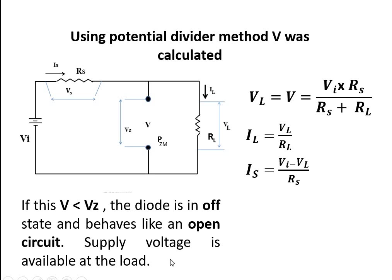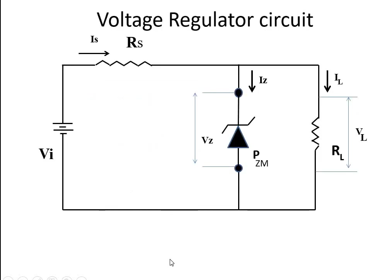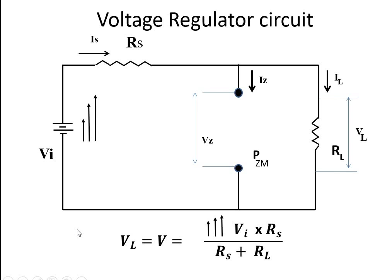Now let's imagine that Vi has started increasing. Vi is increasing gradually, and it reaches a value where this V is now equal to the breakdown voltage. Breakdown is triggered.